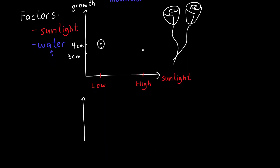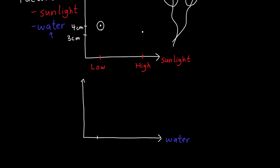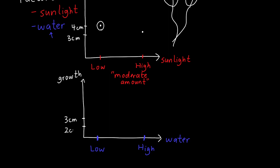Now let's carry out our second experiment — varying the amount of water we give our rose bush. We try a low amount of water and a high amount of water. For this experiment we choose a moderate amount of sunlight, so hopefully sunlight doesn't have too much of an effect. We carry out the experiment and find that with a low amount of water the roses grow about three centimeters, but with a high amount of water they only grow two centimeters. So it looks like we want to give them a low amount of water.